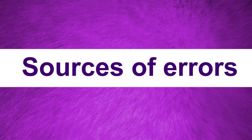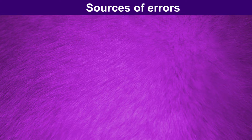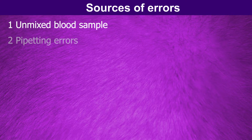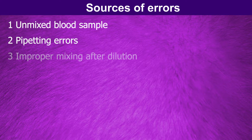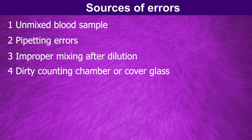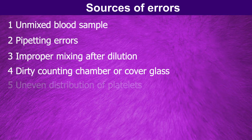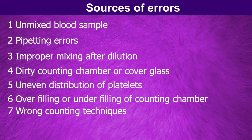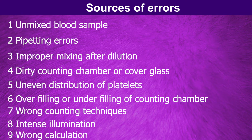Sources of errors: We can see a number of sources of errors related to this test — unmixed blood sample, pipetting errors, improper mixing after dilution, dirty counting chamber or cover glass, uneven distribution of platelets, overfilling or underfilling of the counting chamber, wrong counting techniques, intense illumination, and wrong calculation.